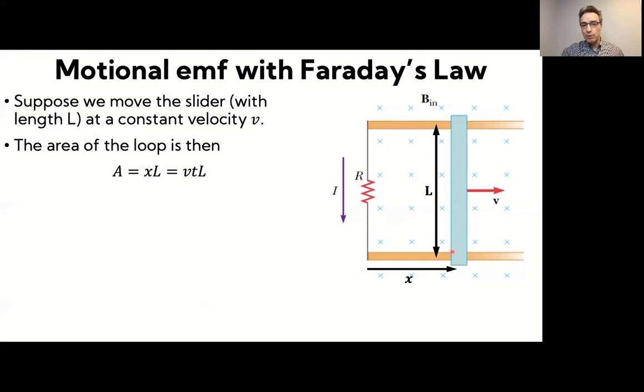But X, if we're moving at a constant velocity, is just the velocity times the time it took to go all the way from the left side to where we are now. So the surface area of the loop, the area enclosed by the loop is VT times L. Magnetic flux then is simply the strength of the magnetic field B times the area of that loop. So that's B times VTL.